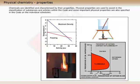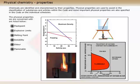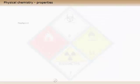Chemicals are identified and characterized by their properties. Physical properties are used to assist in the classification of substances and articles within the code, and some important physical properties are also specified in the code on the individual schedules. The physical properties we are concerned with are listed below. Click on the properties to get more information.